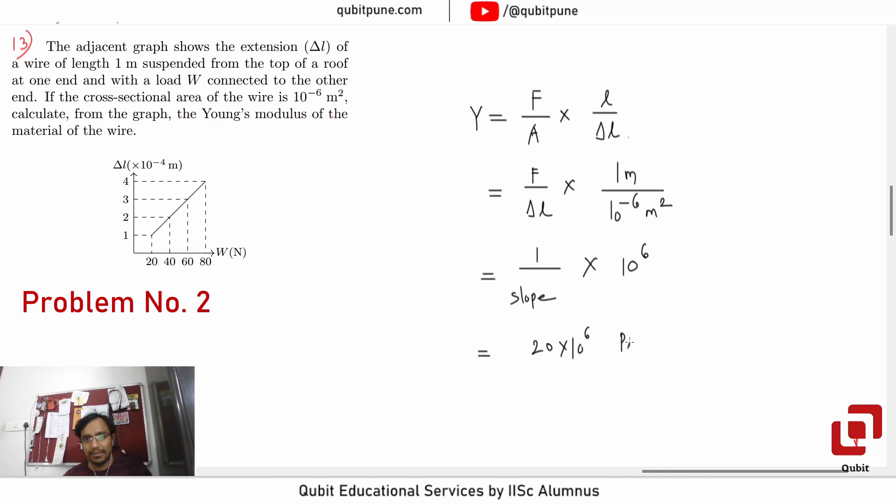So it's 20 times 10 to the 6. So the answer is 20 times 10 to the 6.